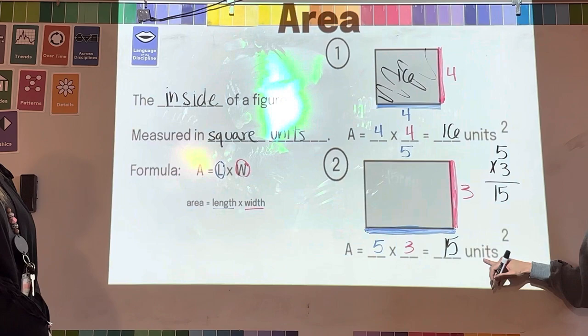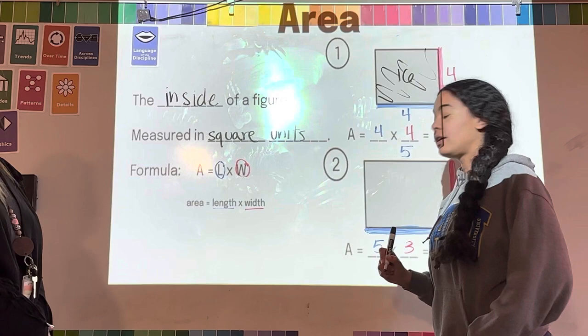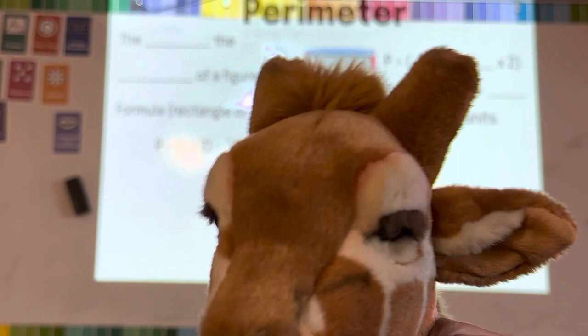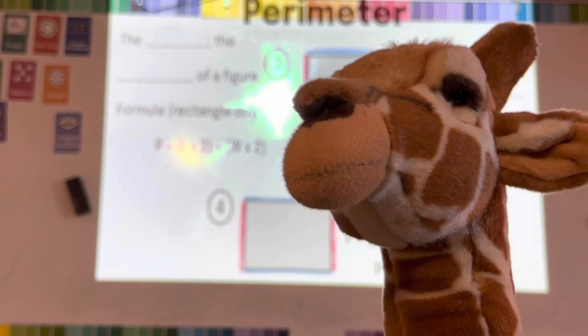And we have our units squared again because there are two different dimensions that we were dealing with. All right, and that is how you solve area of a square or a rectangle. Really it's the same lesson, but we're just going to keep going. Yay, math!